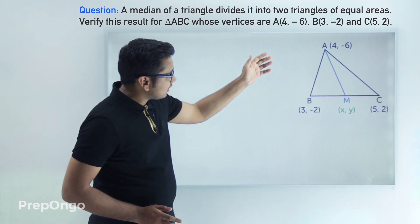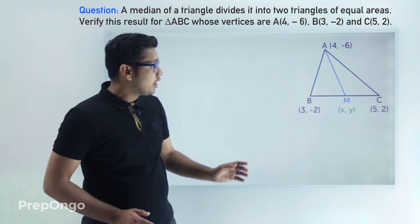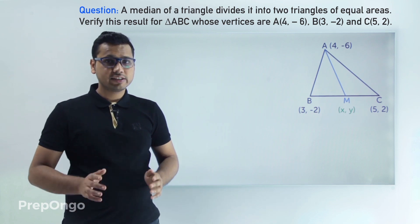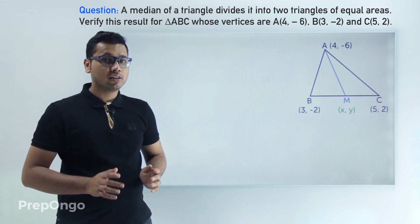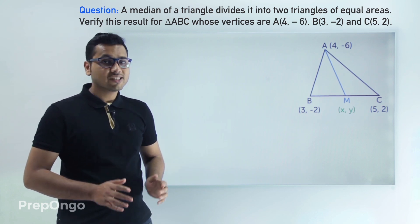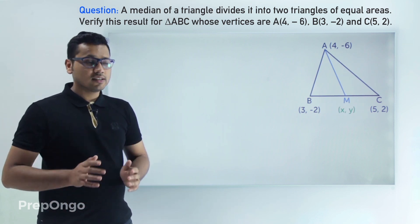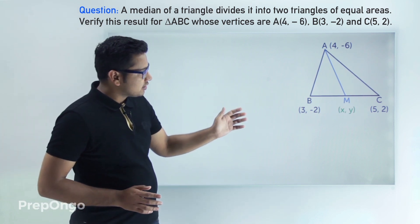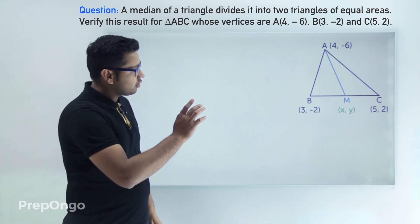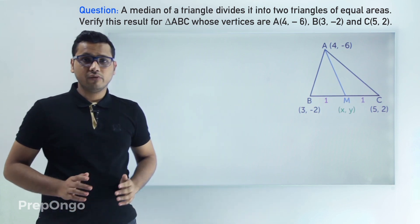We have to prove that the area of triangle ABM equals the area of triangle AMC. We can find the area of any triangle using our formula. Now, since M is the midpoint of BC, we can apply the midpoint formula.